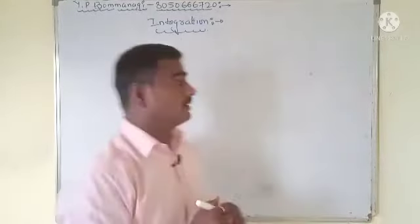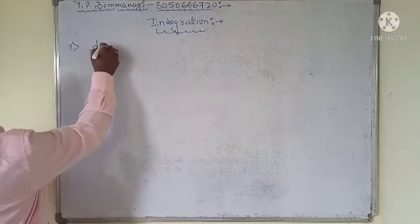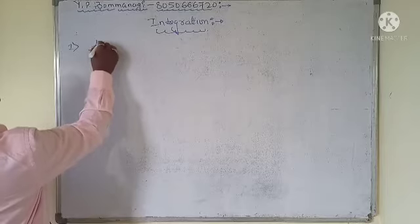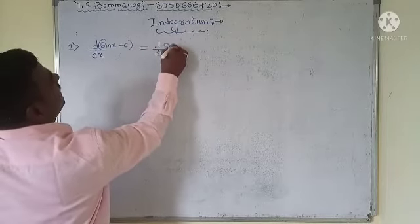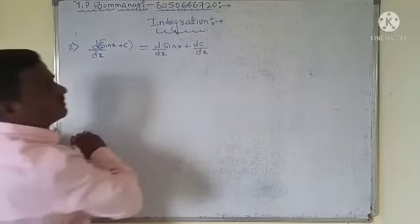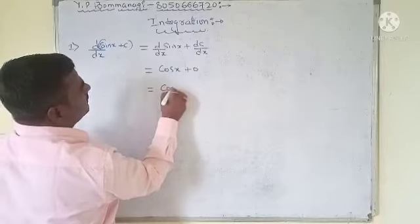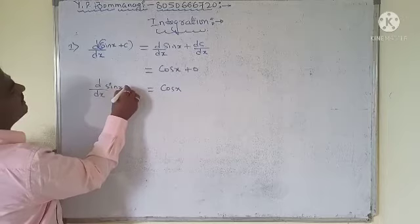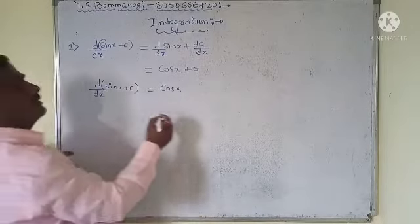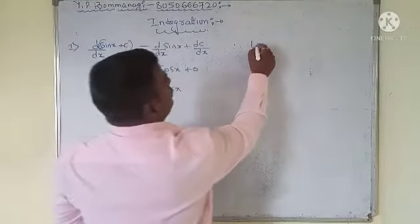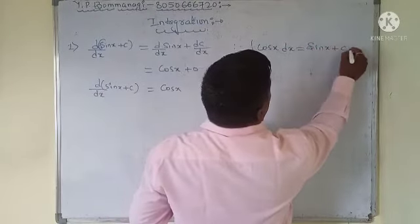Let us discuss how to find values one by one. For example, the differentiation of sin x is cos x, and the differentiation of a constant c is zero. So the differentiation of (sin x + c) is cos x. Therefore, the integral of cos x dx equals sin x plus c, where c is some arbitrary constant.